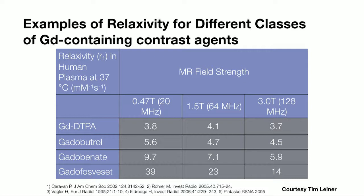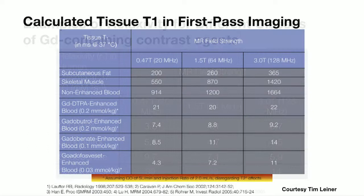At different field strengths our contrast agents have different relaxivities. As you go to higher field strengths, although the higher relaxivity agents still remain higher, the relative amount of enhancement is not so great, so there's less advantage from these high relaxivity agents as we go up in field strength.